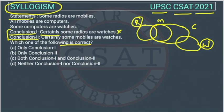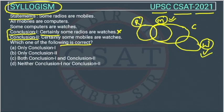Conclusion two says: certainly some mobiles are watches. This is mobile and this is watches. There may be some relationship between mobile and watches, but we don't know the relationship between these because this is not given. So we cannot draw this conclusion either — this conclusion is also wrong.